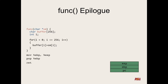The call instruction pushes the next instruction that would have been executed onto the stack — that's where the saved EIP comes from, right above EBP. So pop EBP restores EBP, moves the stack up, and now what the stack pointer is pointing to is the saved instruction pointer. Then ret jumps to that and moves the stack up.